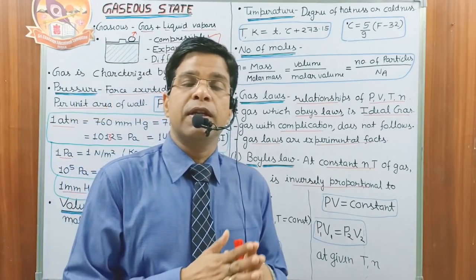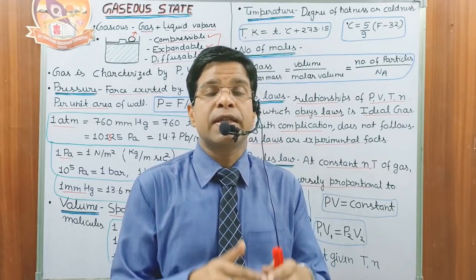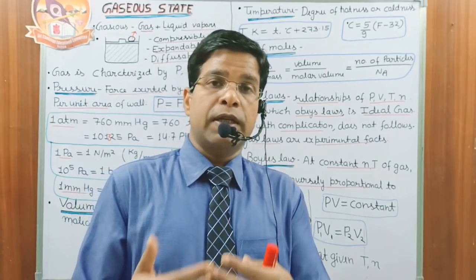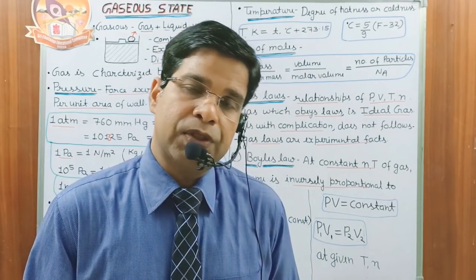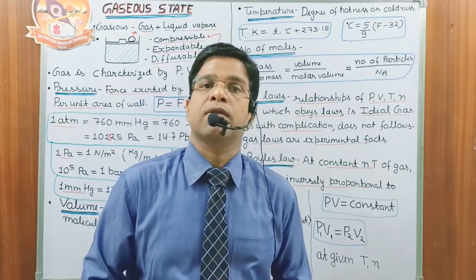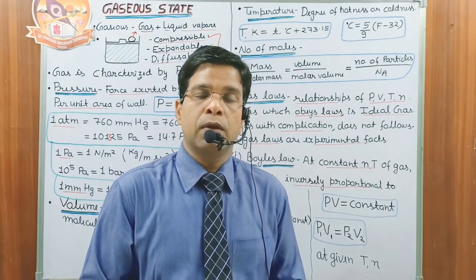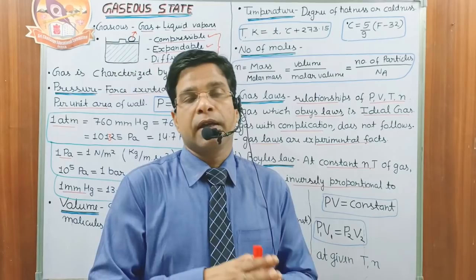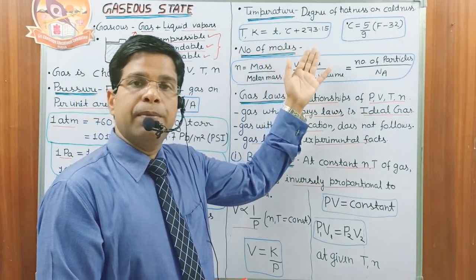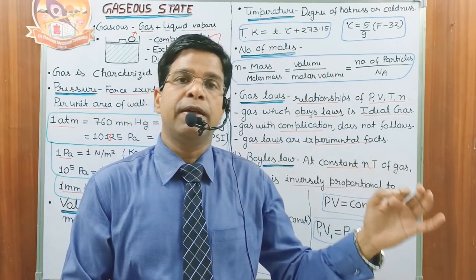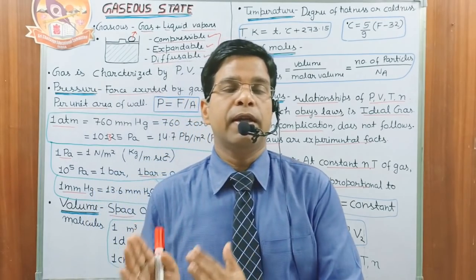How can we define temperature? Temperature is the degree of hotness or coldness of any system — how hot or how cold the system is. In this chapter we use the Kelvin unit. Temperature in Kelvin can be converted from degree Celsius by the formula: T(K) = T(°C) + 273.15.